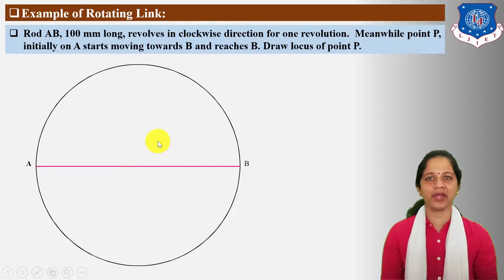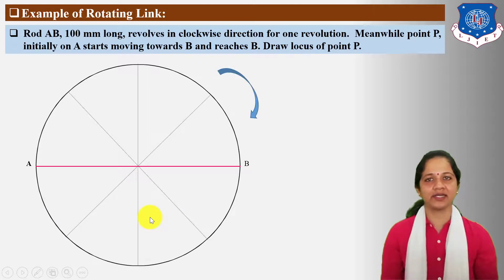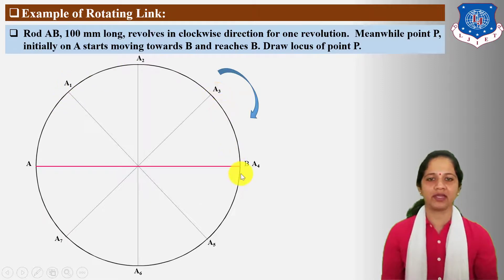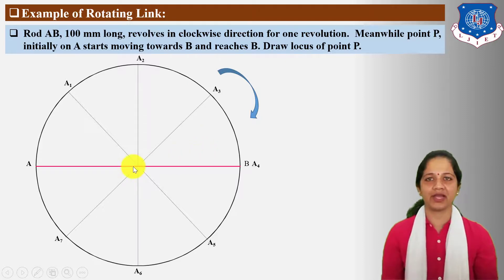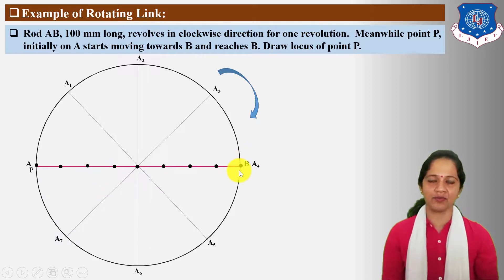Next, locate uniform 8 positions of AB road for one complete revolution in clockwise direction and mark A1, A2, A3, A4, A5, A6, A7 as uniform positions of road AB. When the AB road completes one revolution in the clockwise direction, meanwhile point P moves from A to B. So divide this AB line into equal 8 parts.